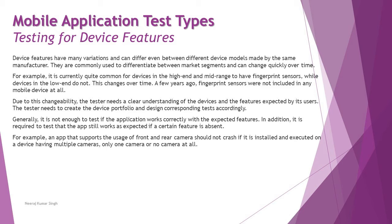For example, just a few years ago not all phones had a fingerprint sensor, but currently almost every phone has one built in. Going forward, there may be no phone without a fingerprint sensor, or every phone may have at least three cameras. Things have been changing over time, and due to this changeability the tester needs a clear understanding of the devices and features expected by users. The tester needs to create a device portfolio and design corresponding tests to measure them accordingly.